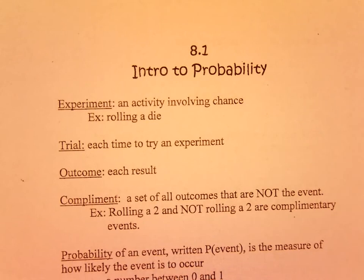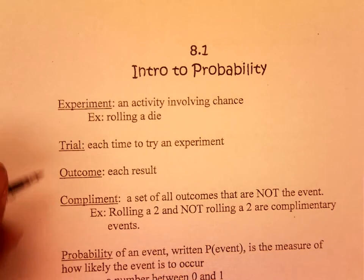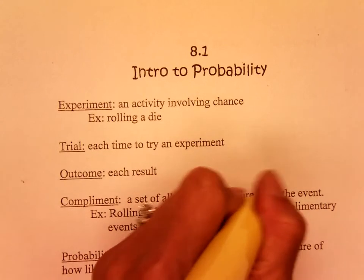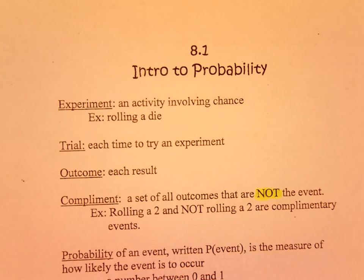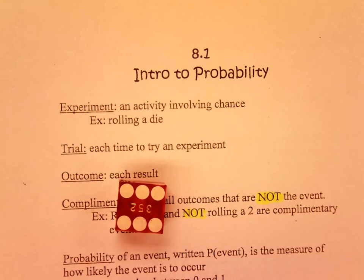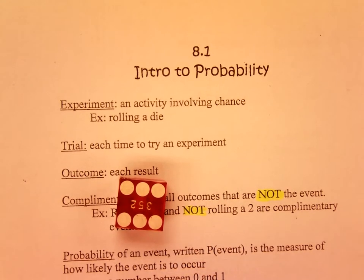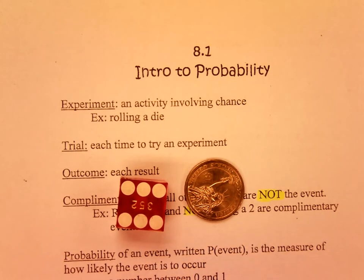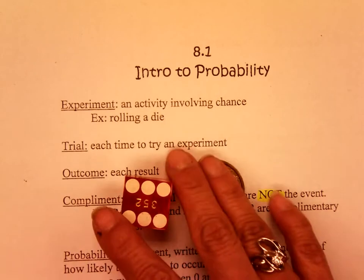A complement is a set of all outcomes that are not the event. The key word here is 'not.' For example, rolling a 2 and not rolling a 2 are complement events. If you rolled a 6, the complement would be not a 6. If you flip the coin and land on tails, the complement would be not tails. The word 'not' tells you it's a complement.